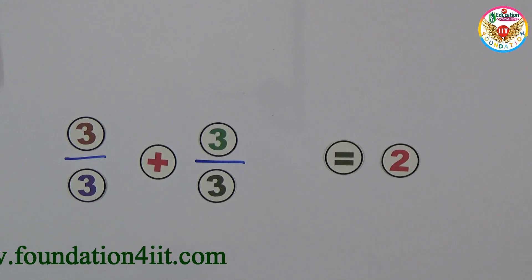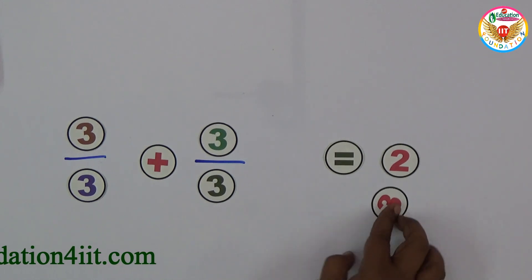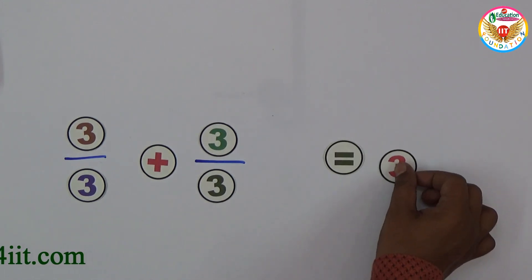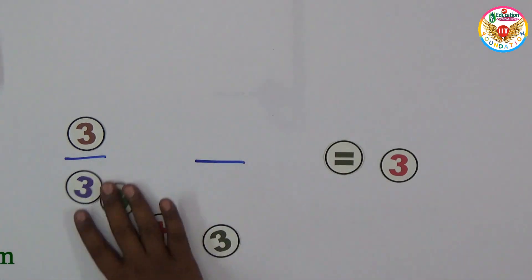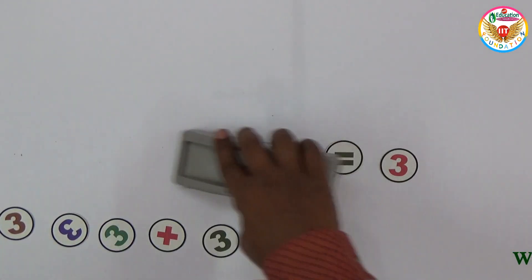Again with 4 threes I need to make it equal to 3. Instead of 2 I should make it equal to 3 now. So let me show that.